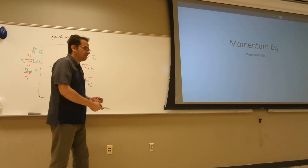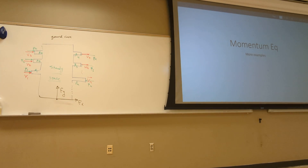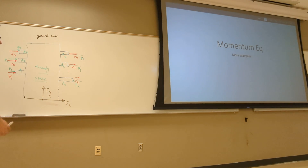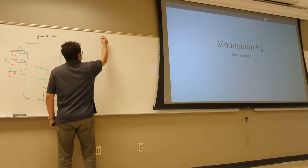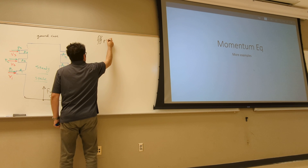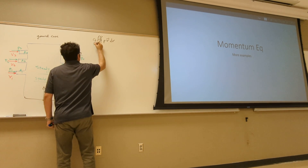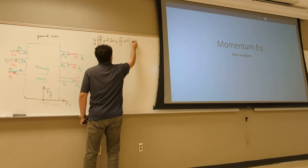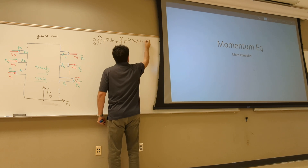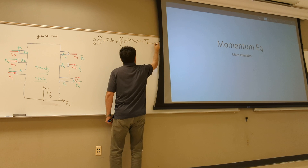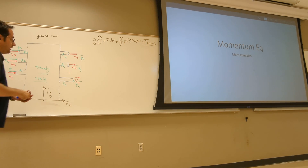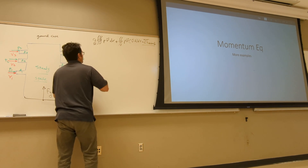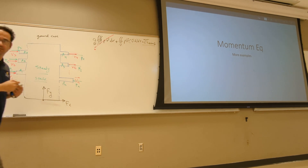We may also have a conceptual problem where I give you the big integral and say simplify it for that special case — no number substitution, just simplify it. For that, we start with the momentum integral: the surface integral of velocity times (V dot n) is equal to the sum of external forces. Now I want to simplify it for steady state — there is no change in the pattern versus time, so the time derivative term goes to zero.